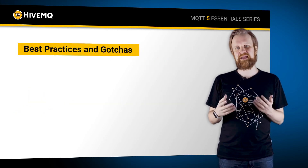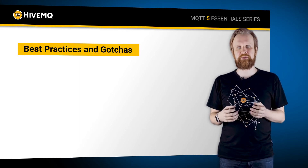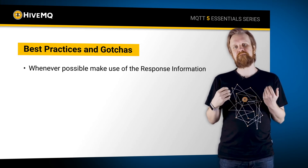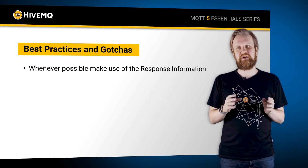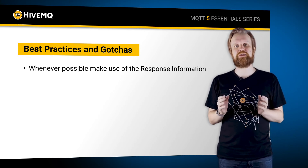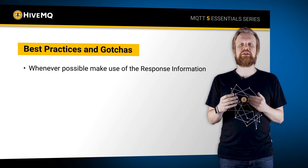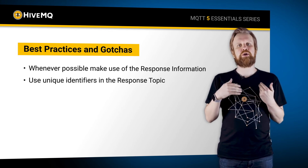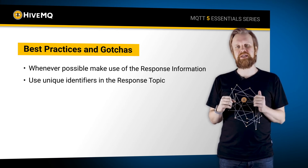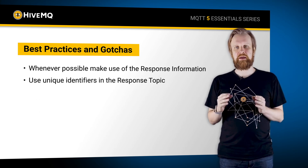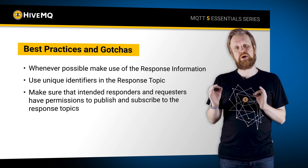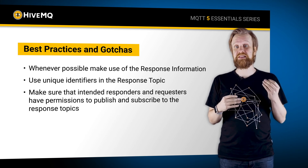Now let's talk about best practices and typical gotchas when implementing the request-response pattern. You should absolutely use the response information field in the connect when you can. This way you can define a certain part of your topic tree specifically for the response topics. Speaking about response topics, a very good practice is to implement unique identifiers within each of the response topics so the response can even be mapped to specific clients. A typical gotcha is that when you talk about topic permissions in MQTT, you have to make sure that a receiving client of a message that is implemented in a request-response pattern also needs to be able to publish on said response topic.